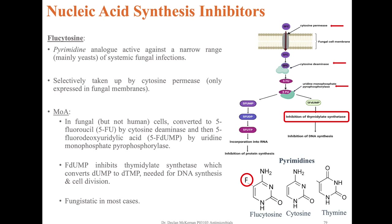Pyrimidines are taken up into fungal cells via a specific transporter and modified by a series of enzymes, one of which is thymidylate synthetase. By using pyrimidine analogues — chemicals similar to pyrimidines such as flucytosine, which resemble C's and T's but have a one-atom difference — these can inhibit the thymidylate synthetase enzyme by competing with C's and T's. Flucytosine is active against a wide range of systemic fungal infections, mainly yeasts.